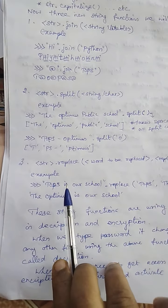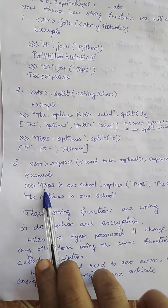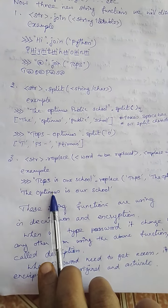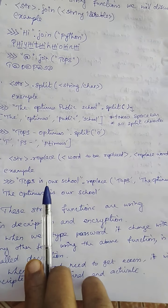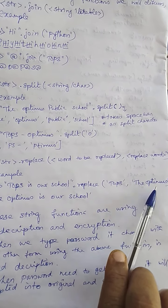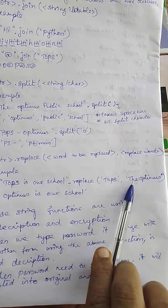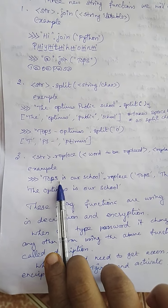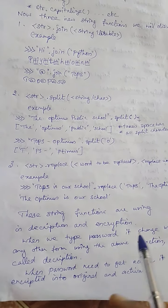See: 'tops is our school' becomes — 'tops' is going to be replaced as 'the optimus' — so the result is 'the optimus is our school'. 'Tops is our school' dot replace of 'tops' comma 'the optimus'. Wherever 'tops' is present, it gets replaced with 'the optimus'. Here 'tops' is the first word, so the first word becomes 'the optimus'.